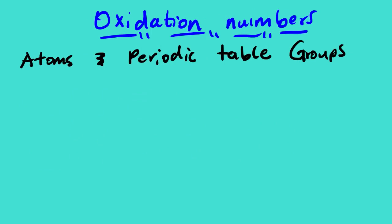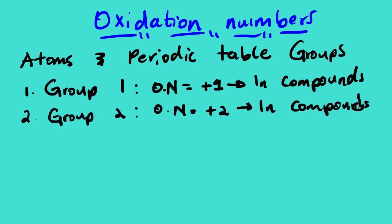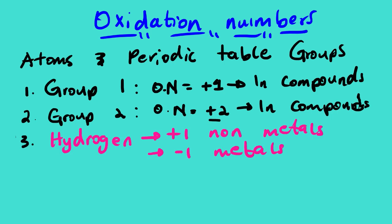Looking at the predictable group rules: all elements in Group 1 have an oxidation number of 1+ in compounds. All elements in Group 2 have an oxidation number of 2+ in compounds.